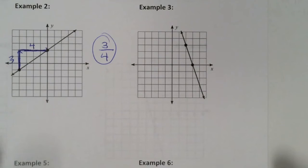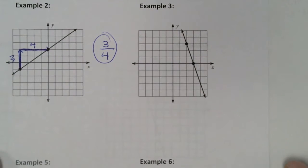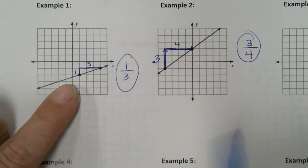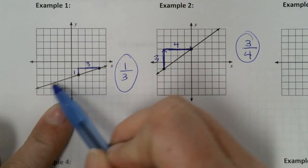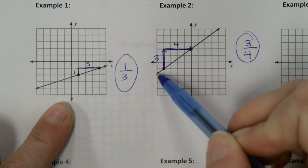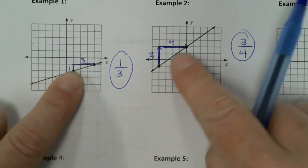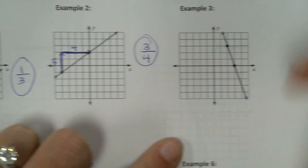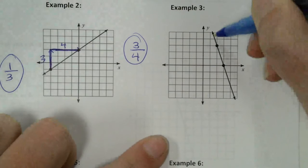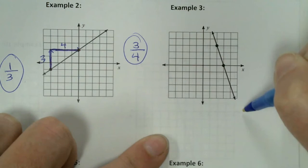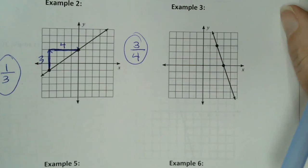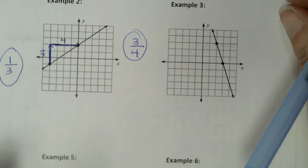Example three. Now this line is a bit different. Remember yesterday we talked about lines that are going up — both of these are going up, they're positive. This line is going down. So it is going to have a negative slope, and now let me show you how that happens.